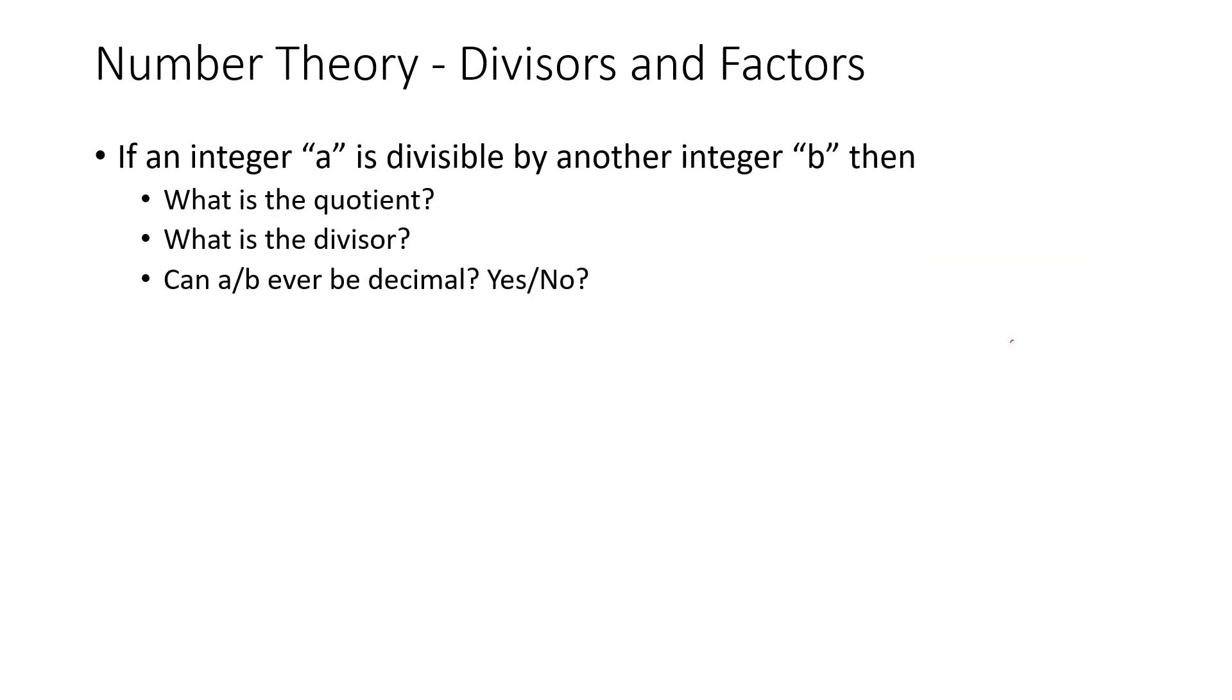Our last question here is: if an integer a is divisible by another integer b, then what is the quotient, what is the divisor, and can a/b be decimal, yes or no? Let's start with the first question. What is the quotient?